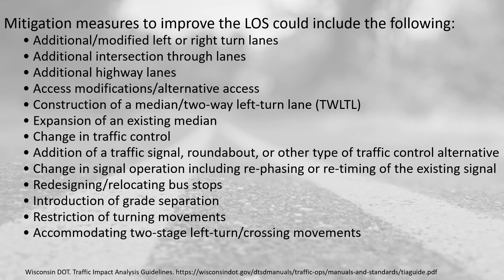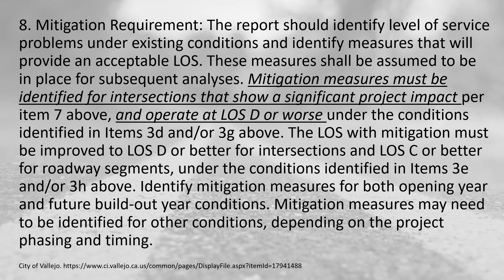Other mitigation measures include additional through lanes, additional highway lanes, modifications to access — such as providing access on a frontage road or side street instead of the main road — construction of a two-way left turn lane, expansion of an existing median, or changes in traffic control. Common examples are the addition of a traffic signal, roundabout, or other traffic control type, signal re-phasing or retiming, redesigning or relocating bus stops, introducing grade separation, restrictions on turning movements such as right-in/right-out only, and accommodating two-stage left turn or crossing movements.